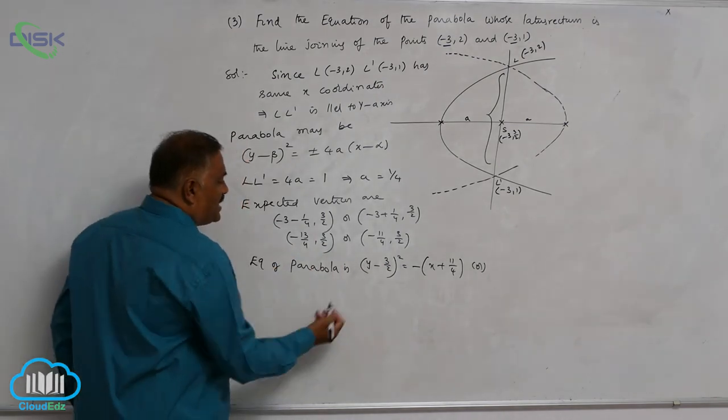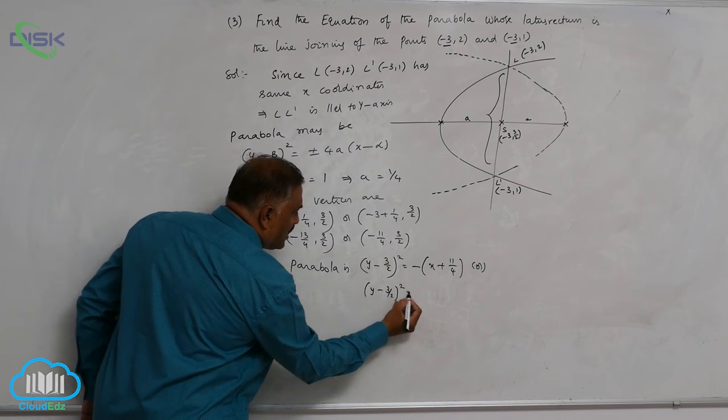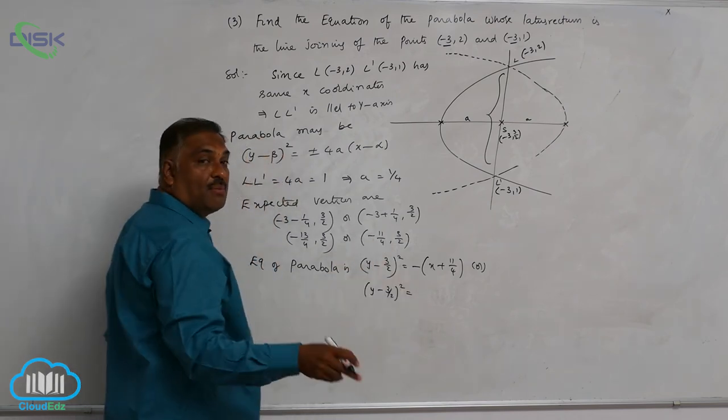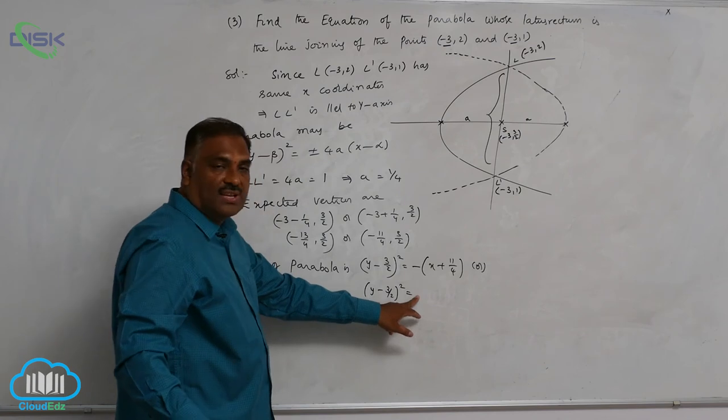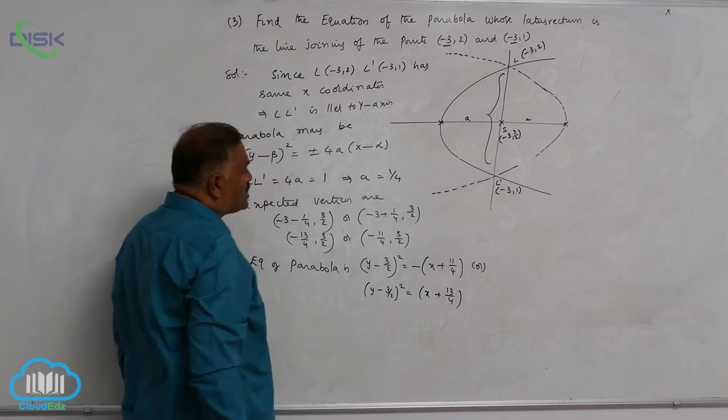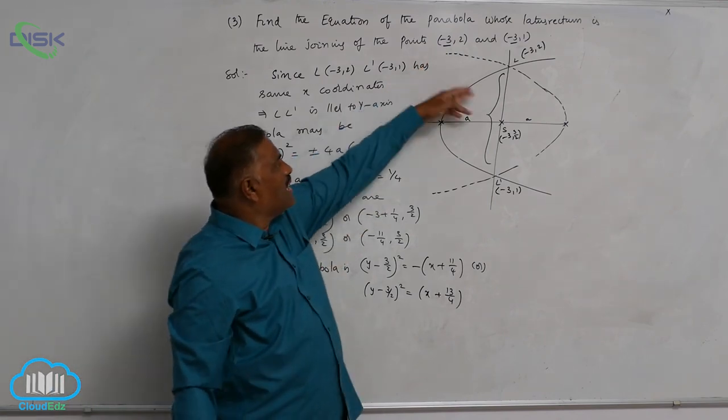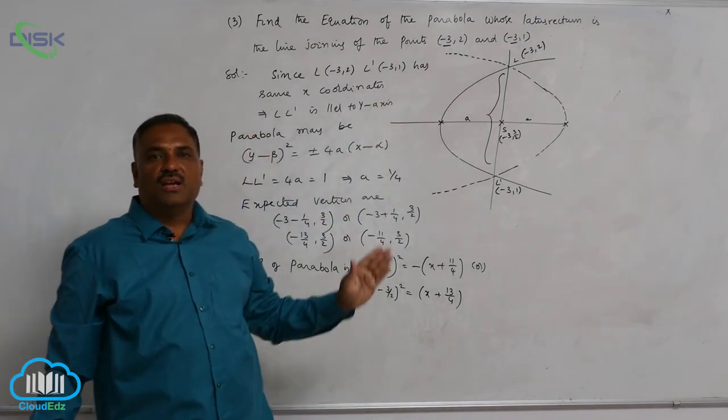Now the right-hand parabola is: (y - 3/2)² = (x + 13/4). For the right-hand parabola we will get a positive sign. So these two are the expected parabolas for which the latus rectum is always parallel to the y-axis.